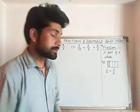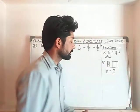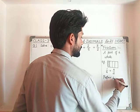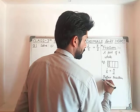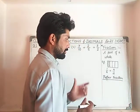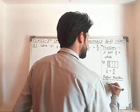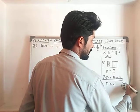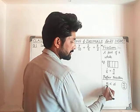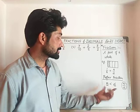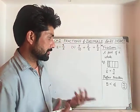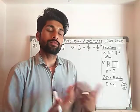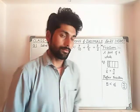Now we will talk about proper fraction and improper fraction. What is a proper fraction? A proper fraction is a fraction having numerator less than denominator — in the form n upon d where numerator is less than denominator. In terms of its meaning, a proper fraction is a part of a whole quantity. For example, one upon four is a proper fraction.